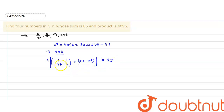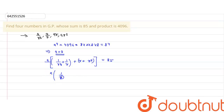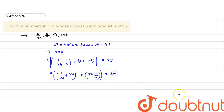Now I am grouping the terms. I take (1/r³ + r³) together and (r + 1/r) together as a common pair. So the expression becomes a times [(r³ + 1/r³) + (r + 1/r)] equals 85.